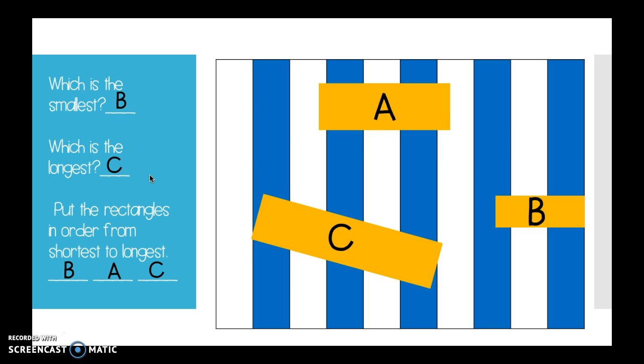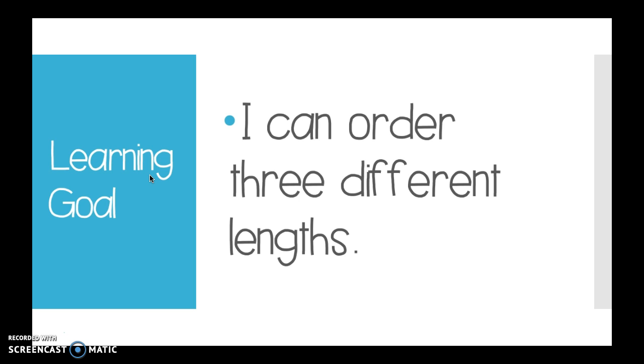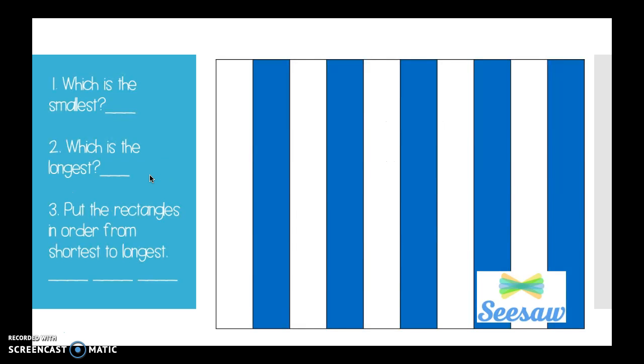All right. Now, our learning goal said that you can order three different lengths. That means put them shortest to the longest, longest to shortest. Sometimes we can move them so that their end points are together. Sometimes we just have to problem solve, like we did using those stripes to see about how big they were. That's what we're going to practice now.